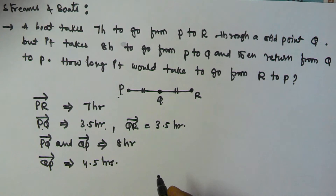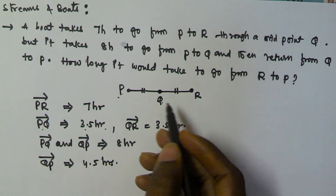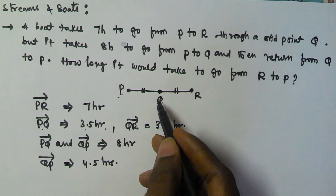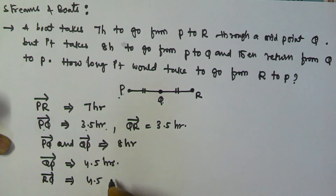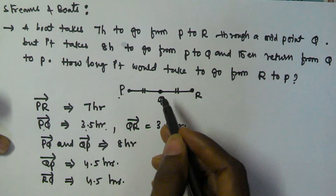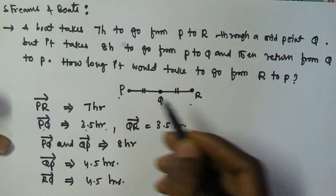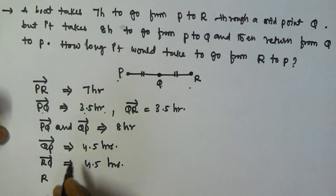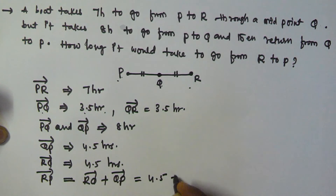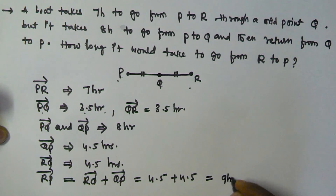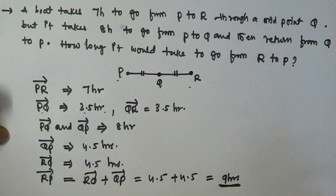Now we have to find R to Q. Since the distance is the same, Q to P takes 4.5 hours, so R to Q is also going to be 4.5 hours. Therefore R to P equals R to Q plus Q to P, which is 4.5 plus 4.5 equals 9 hours. To move from R to P it will take 9 hours. Thank you very much for watching this video, please subscribe to my channel.